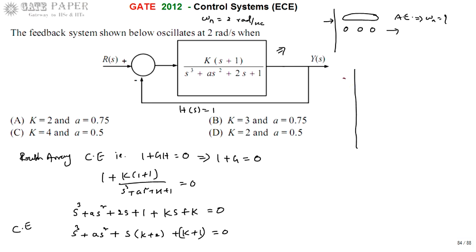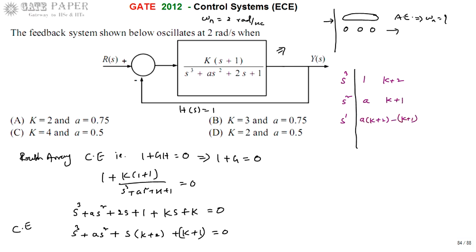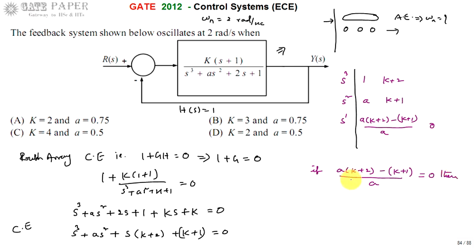Now writing the Routh array: the s³ coefficient is 1, the s² coefficient is a, the s¹ coefficient is (k + 2), and the s⁰ coefficient is (k + 1). The s¹ row entry becomes [a·(k + 2) − (k + 1)] / a. If this value equals zero, we get an all-zeros row, meaning the system is oscillating.